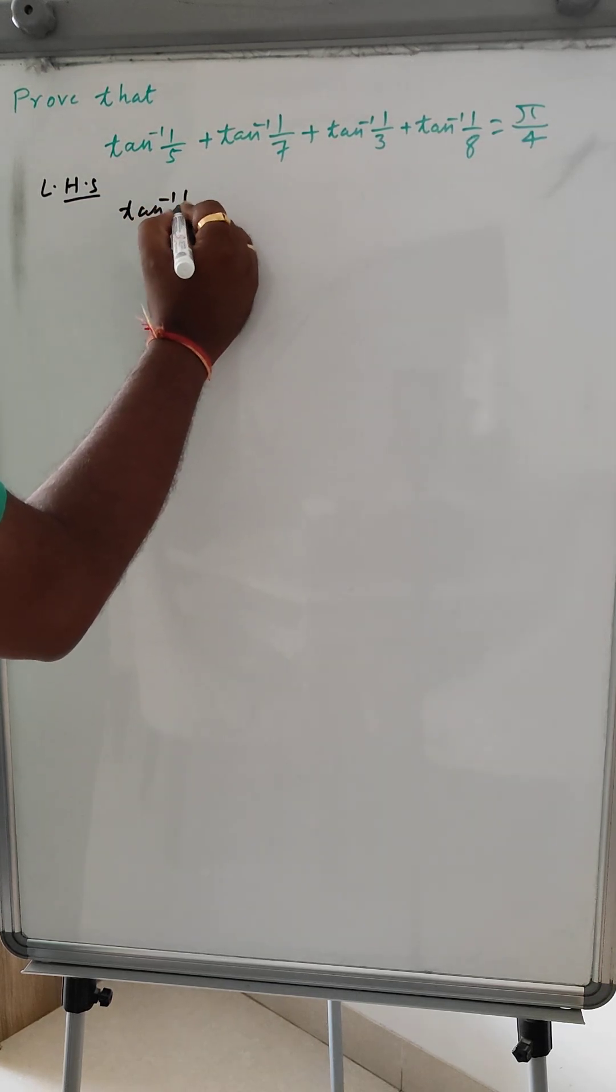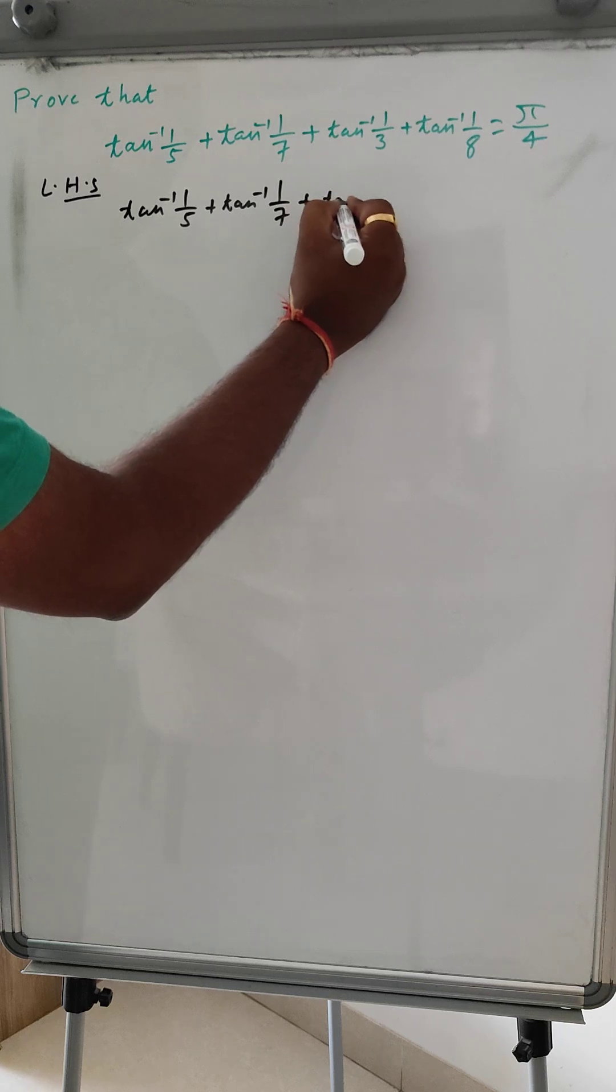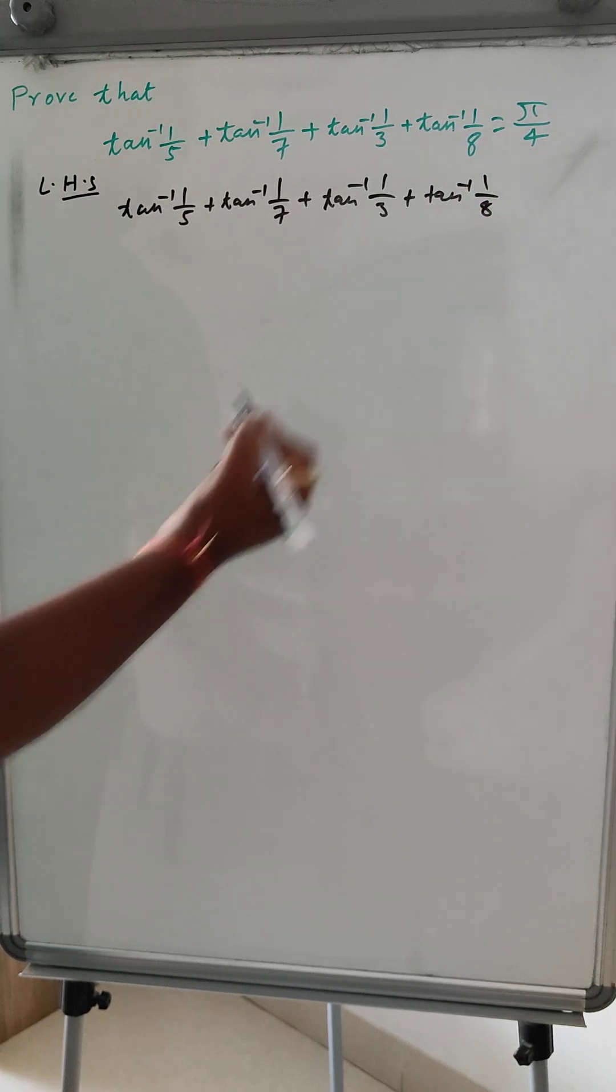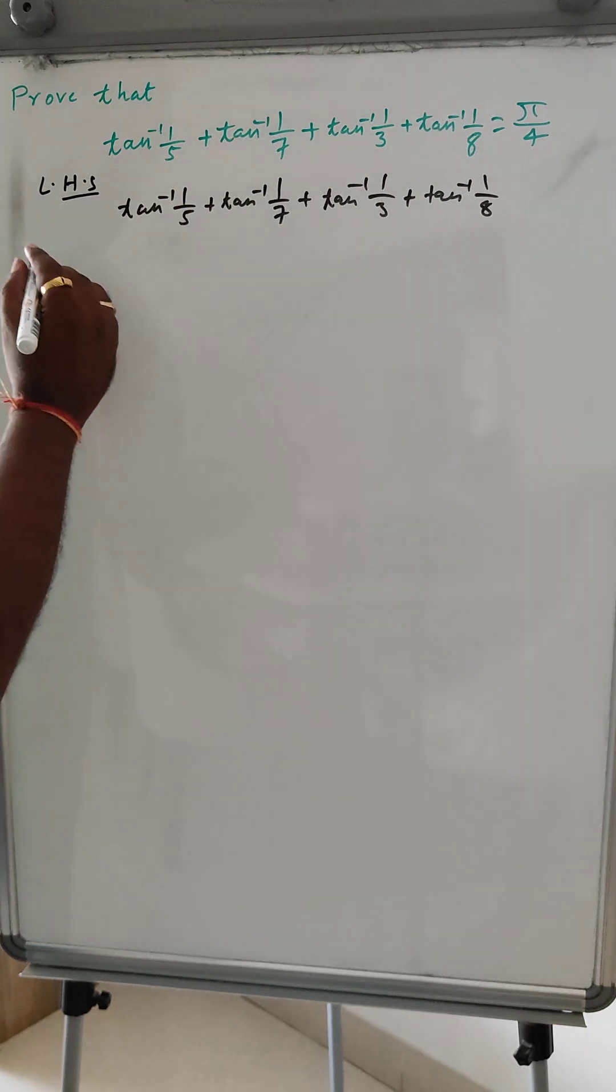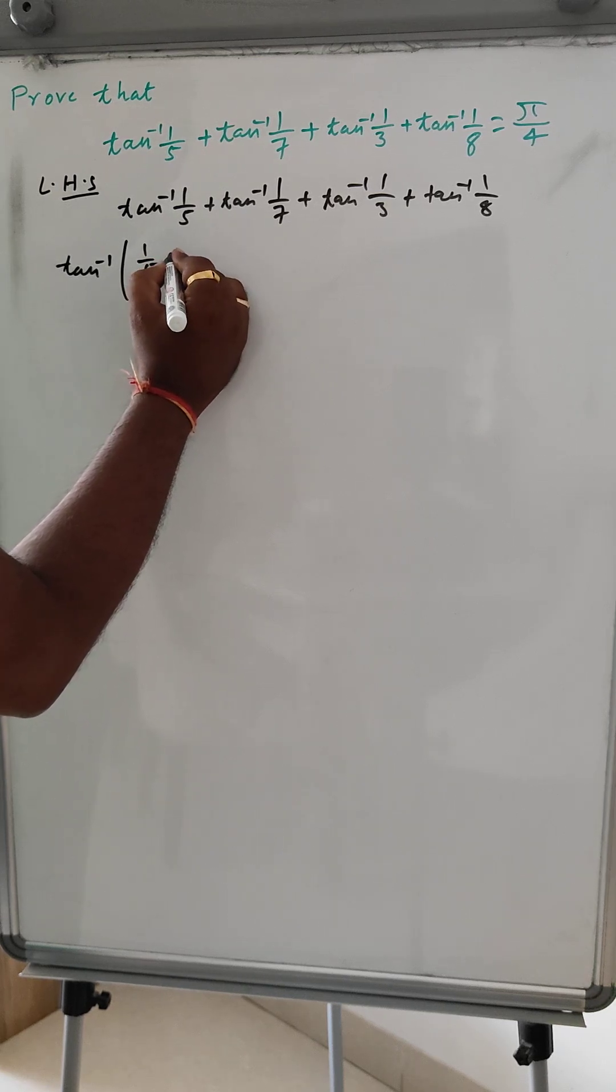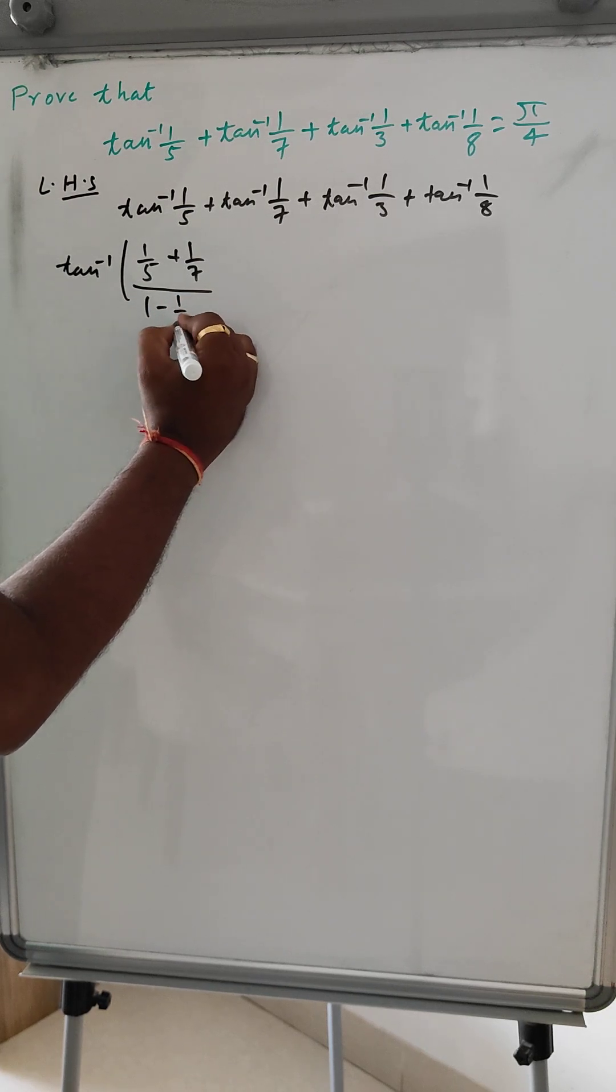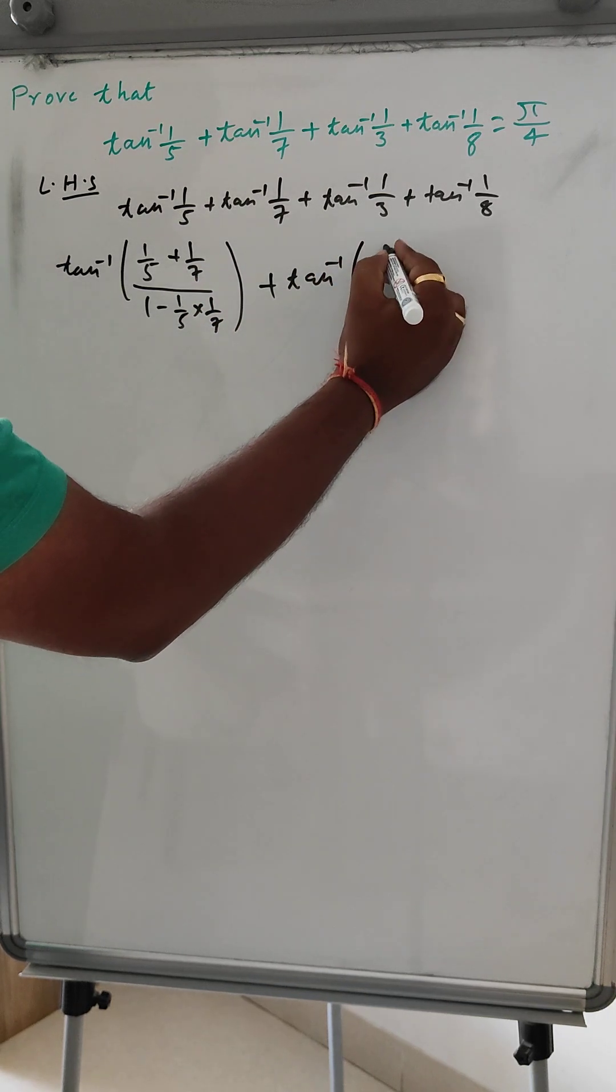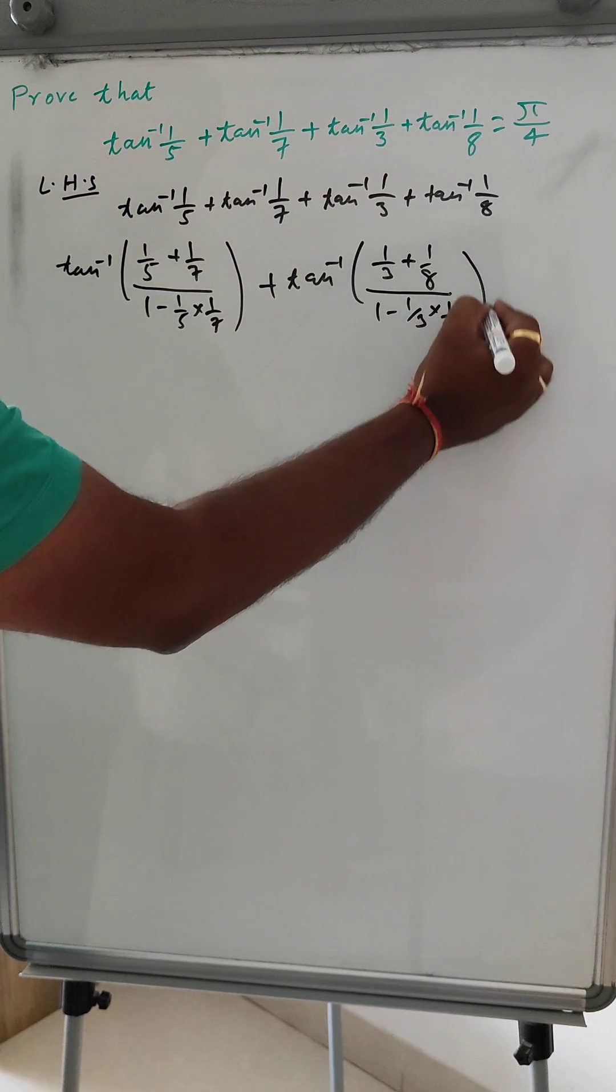So tan inverse 1 by 5 plus tan inverse 1 by 7 plus tan inverse 1 by 3 plus tan inverse 1 by 8. So tan inverse A plus tan inverse B formula we will do for these two and similarly for these two also. So now we can write tan inverse 1 by 5 plus 1 by 7 divided by 1 minus 1 by 5 into 1 by 7, plus tan inverse 1 by 3 plus 1 by 8, 1 minus 1 by 3 into 1 by 8.